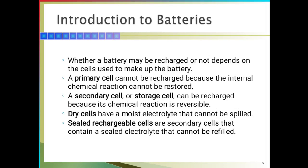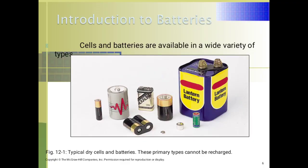Types of batteries: primary cell and secondary cell. Primary cell cannot be recharged again and again because the internal chemical reaction cannot be restored. But secondary cell can be recharged again and again because it is a reversible reaction. In a dry cell, it has a moist electrolyte that cannot be resupplied — that is, sealed cells — so the electrolyte cannot be refilled again. These batteries are examples of primary batteries. It cannot be recharged. That is called the primary cell.